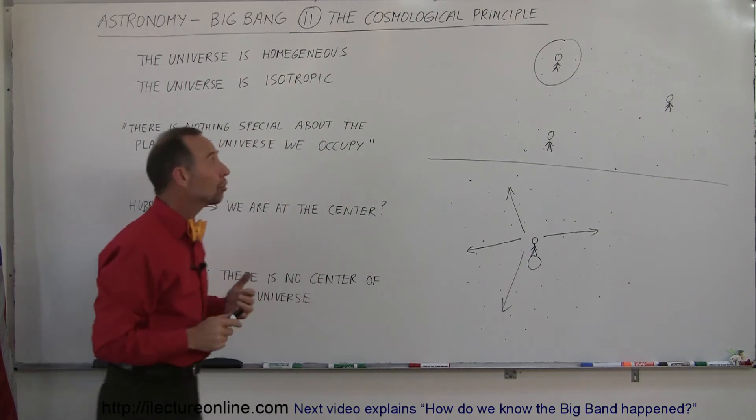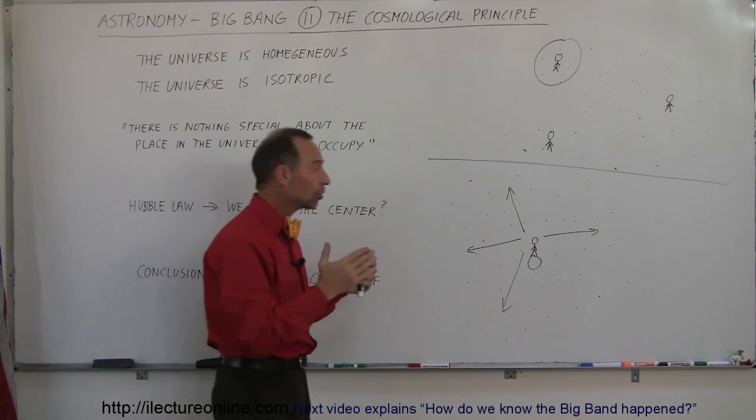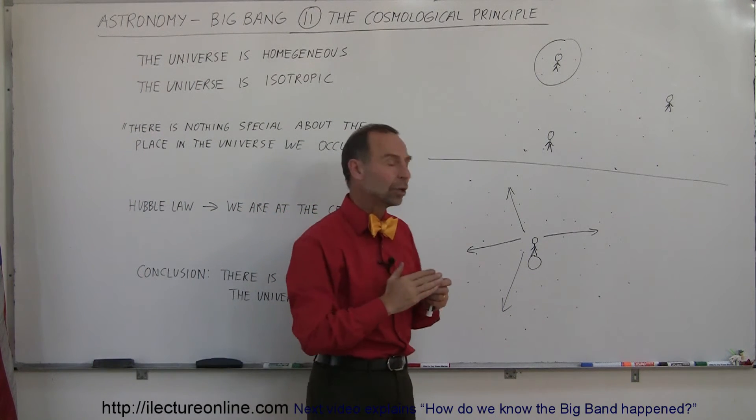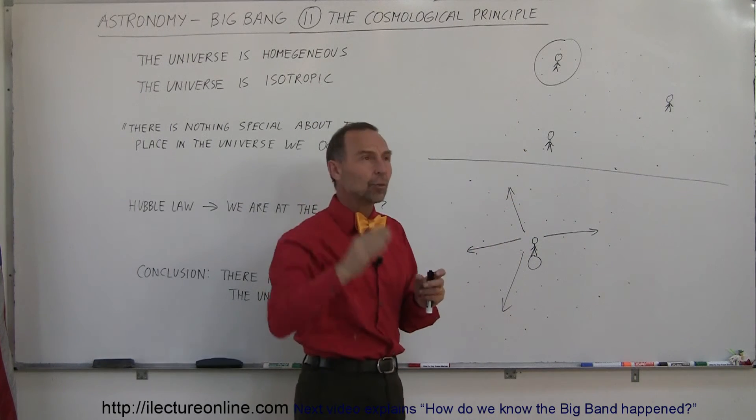Also, we thought that the universe was isotropic. What does isotropic mean is that the universe seems to look the same no matter which direction we look. For example, here we are on the Earth.